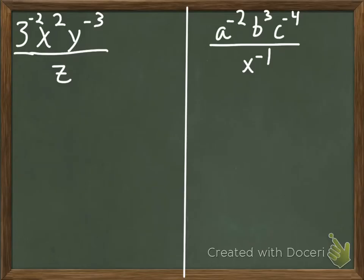We have 3 to the negative 2nd, x squared, y to the negative 3rd, all over z. So if we look, we can identify in our numerator here there are three issues.